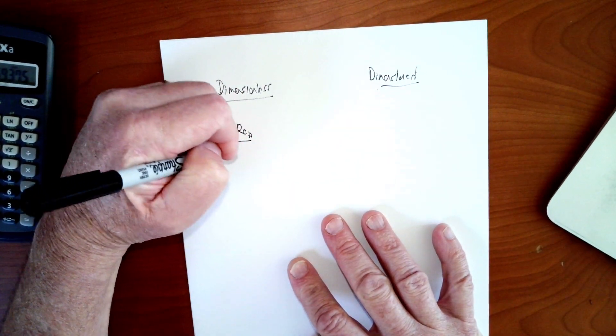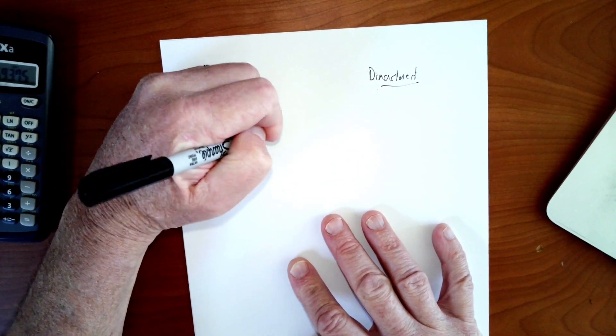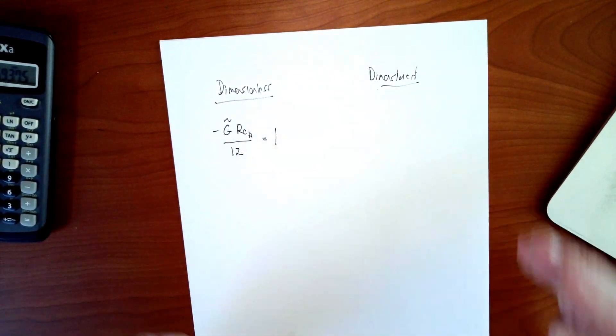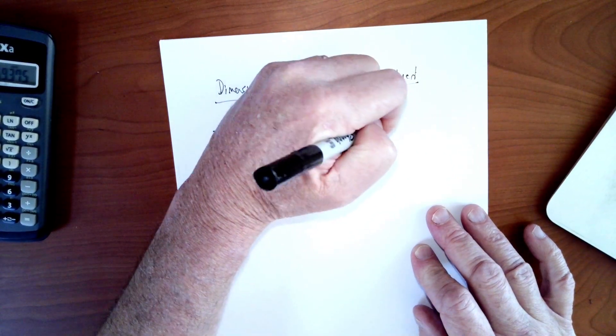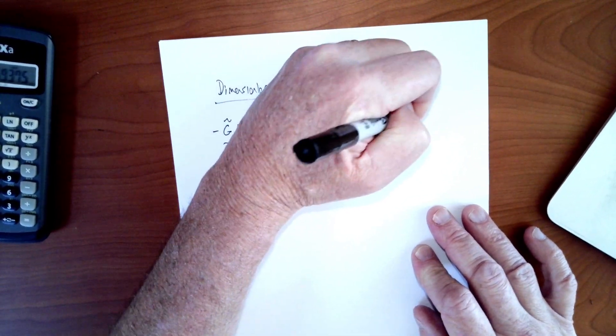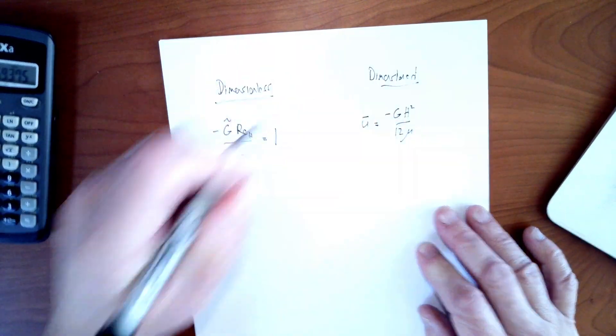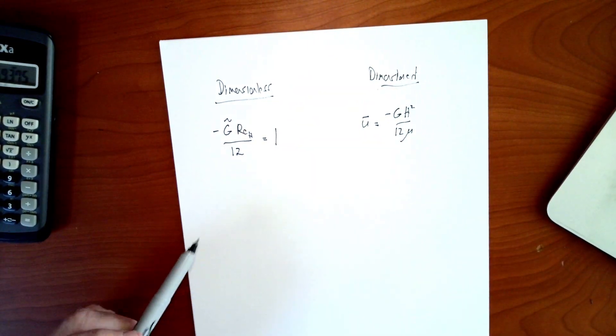And we could solve that either for the Reynolds number or for G to get one in terms of the other. In the land of the dimension, we saw that minus the actual pressure gradient times H squared over 12 mu was the relationship. So they're very similar.